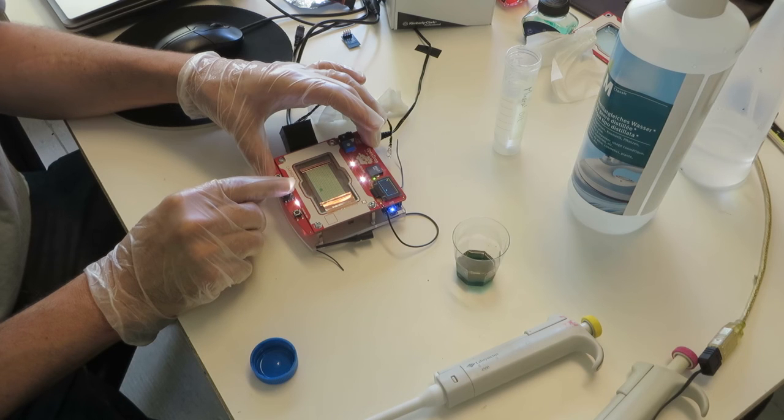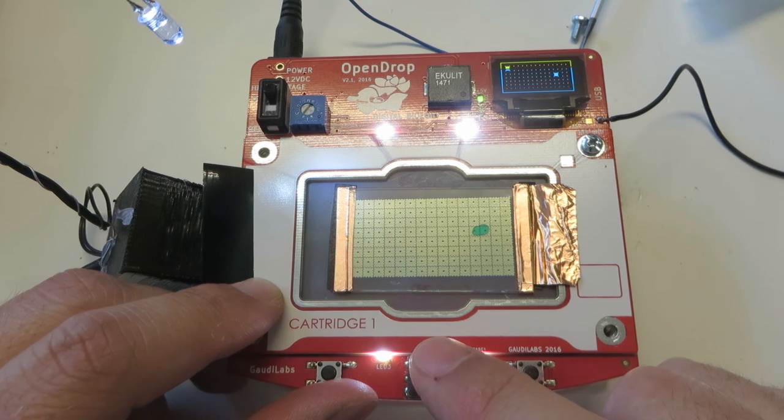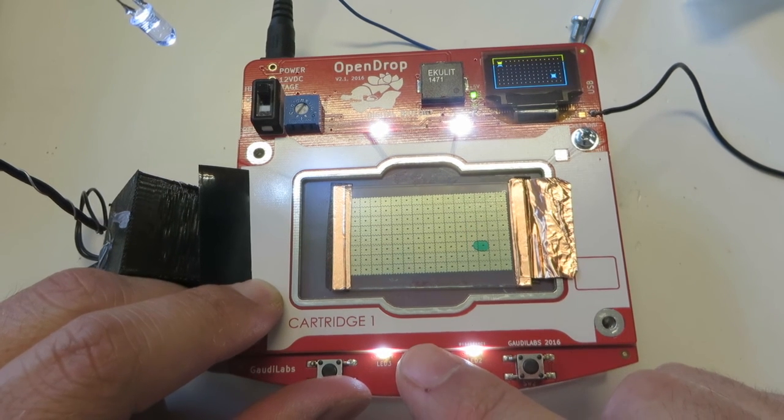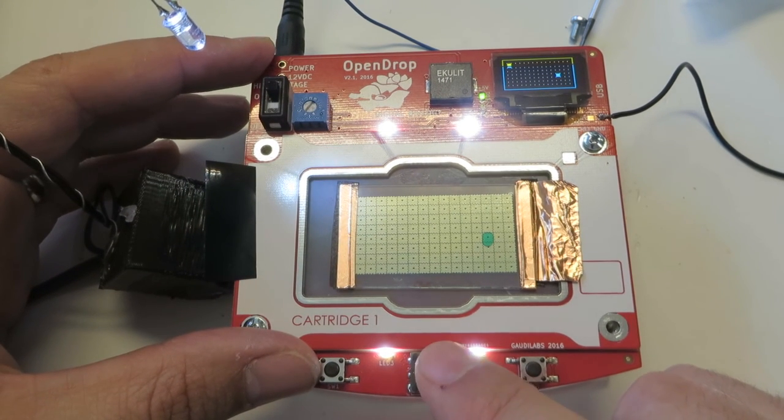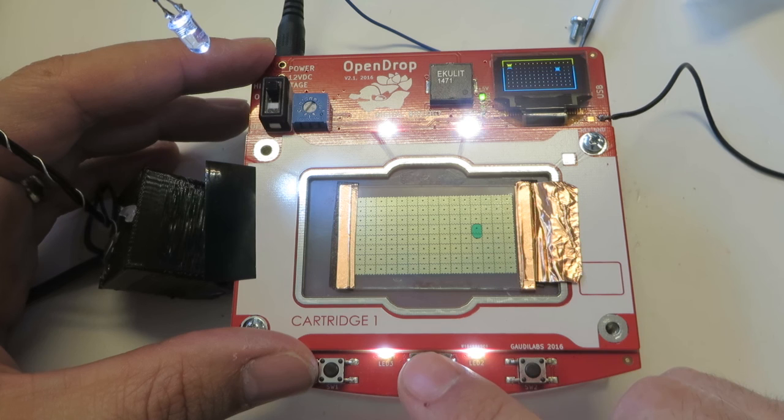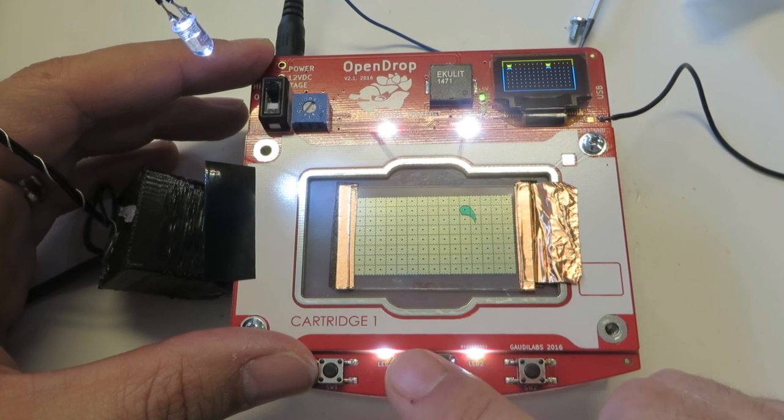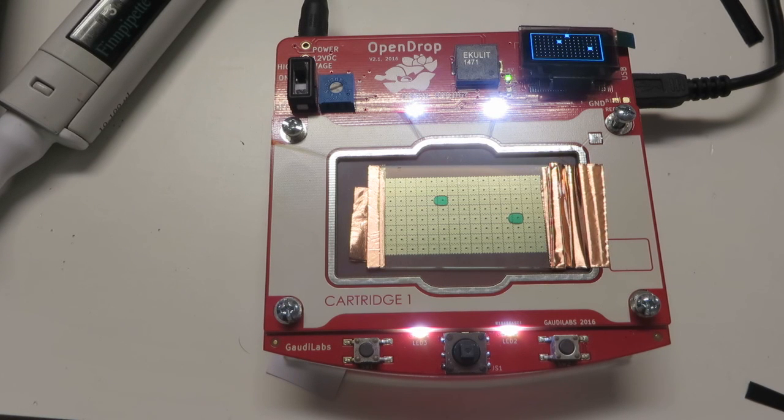Sometimes there are electrodes that don't work that well. It can be that there is a bad coating or a little dust and I don't want to hide this in this video. So you can see that sometimes if the coating is not good it doesn't work as well as in demo videos. Generally we got quite good results with this coating and we continue our research on low-cost electro wetting.